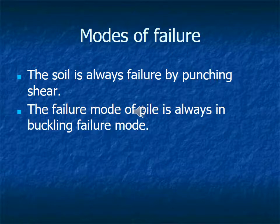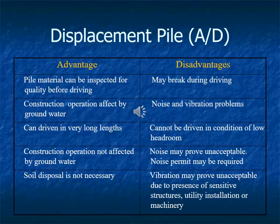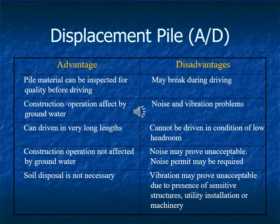Modes of Failure. Soil always fails by punching shear, while the failure mode of a pile is always by buckling. Displacement pile means precast pile — the pile is cast on the ground and driven into it, so the pile material can be inspected for quality before driving. There is no effect of groundwater on pile construction, and piles can be driven to very long lengths by attaching additional segments.